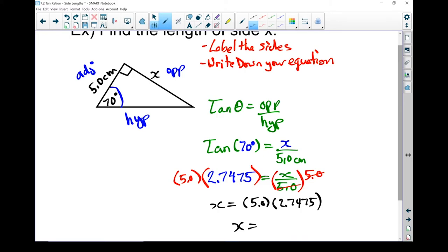x equals, and I'm going to round it off to one decimal place. For angles, round it to the nearest degree. For sides, normally round it off to one decimal place. That side is 13.7 centimeters long. Let me put a quick note here. Just as a reminder, we use the tan function, not second function.